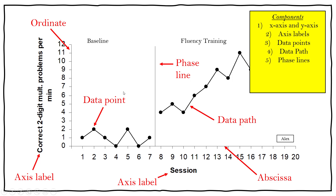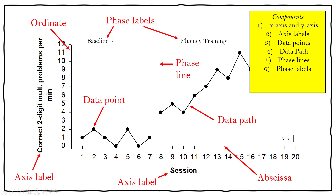You need phase lines — these are lines that separate your different phases. Typically in a line graph you'll have a baseline phase, which is when you measure the behavior under natural conditions to see how often it occurs naturally. You then put a phase line in to demonstrate that you are implementing a treatment, and then measure the behavior during or after that treatment — that would be your treatment condition.